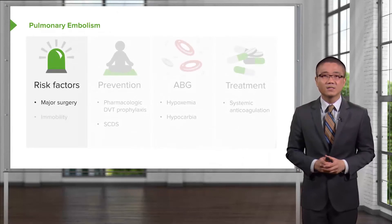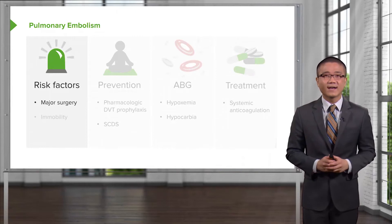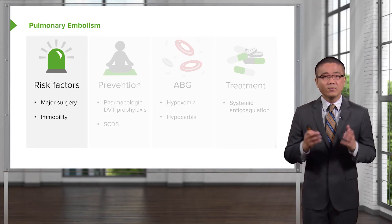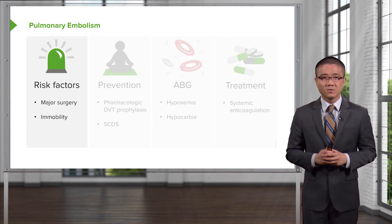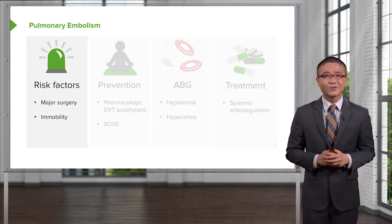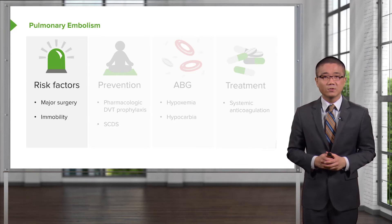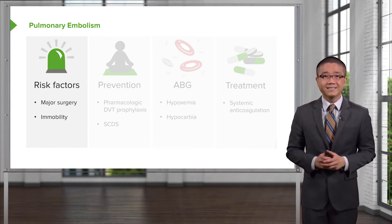Let's evaluate one of the causes — pulmonary embolism. What are some risk factors for pulmonary embolism? First, any major surgery or any periods of immobility. This is the perfect storm for surgical patients because they undergo major surgery and for a period of time it may be painful due to incisions, in which the patients become immobile. How do we prevent DVTs and subsequent pulmonary embolism?